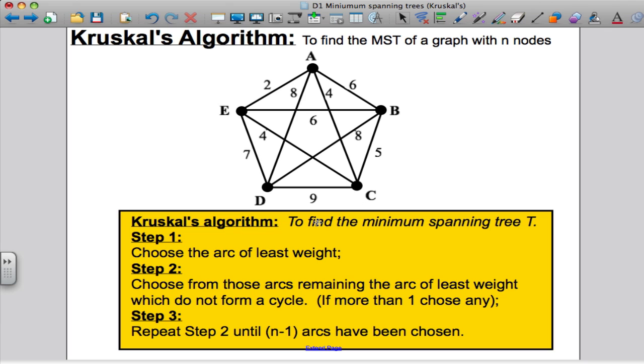So Kruskal's algorithm says, to find the minimum spanning tree T, you do the following. Step one, choose the arc of least weight.